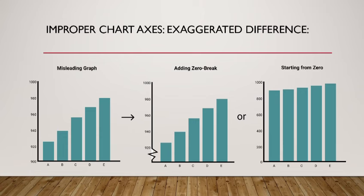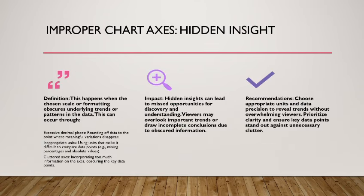Improper chart axes: hidden insight. Definition: this happens when the chosen scale or formatting obscures underlying trends or patterns in the data. This can occur through excessive decimal places, rounding off data to the point where meaningful variations disappear.